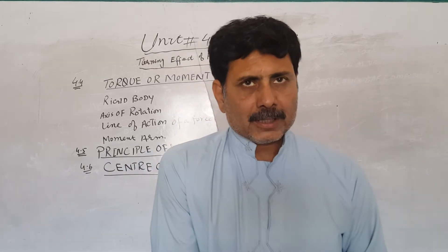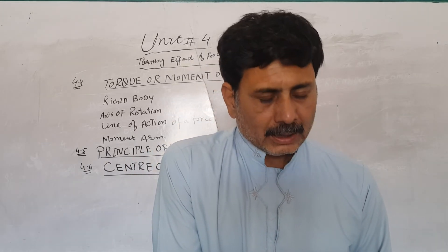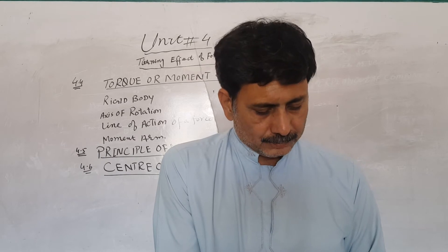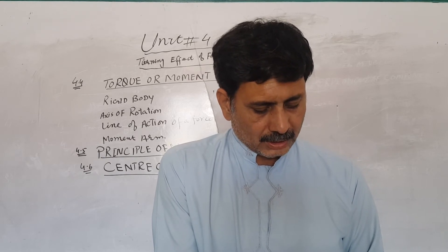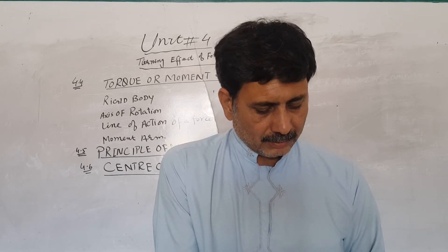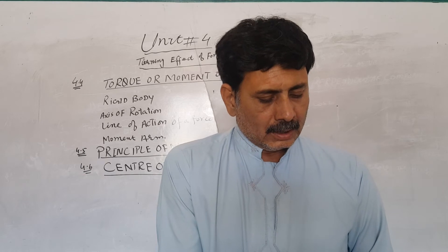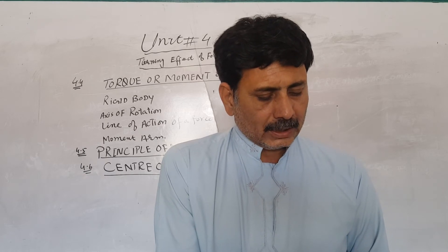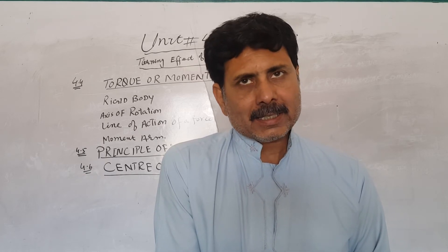Now can you state the definition of a rigid body? This is called the axis of rotation. The axis of rotation is the turning effect. This is called a rigid body.